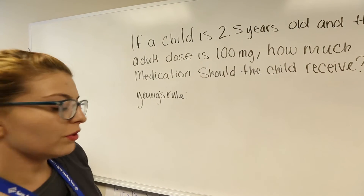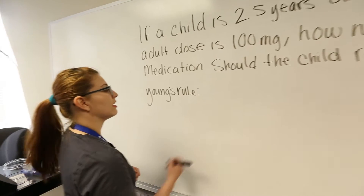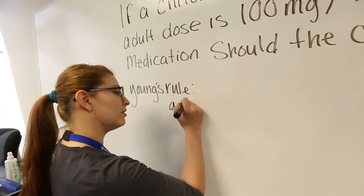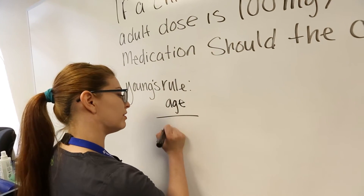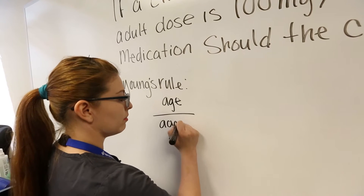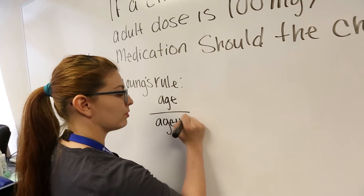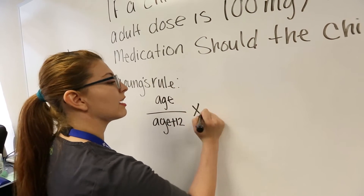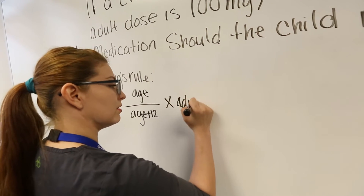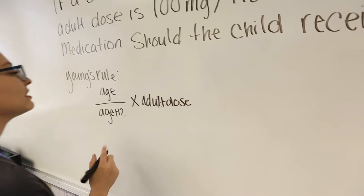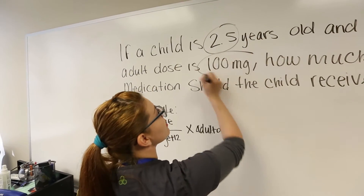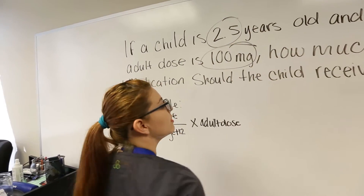So first we're going to use an equation which is the age over the age plus 12, times the adult dose. Our age is right here and our adult dose is right here.